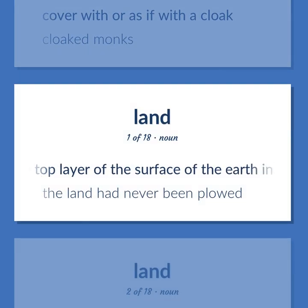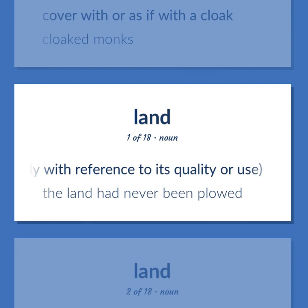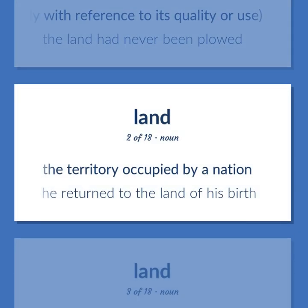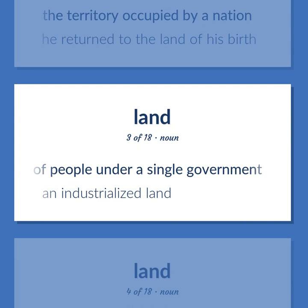Material in the top layer of the surface of the earth in which plants can grow, especially with reference to its quality or use — 'The land had never been plowed.' The territory occupied by a nation — 'He returned to the land of his birth.' A politically organized body of people under a single government — 'An industrialized land.'